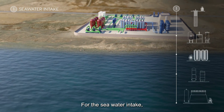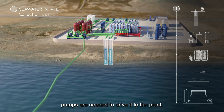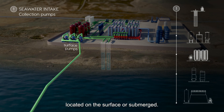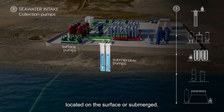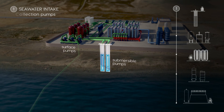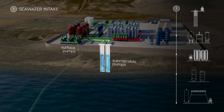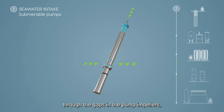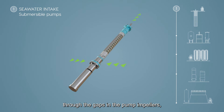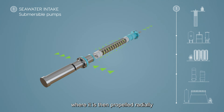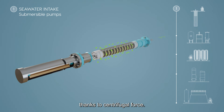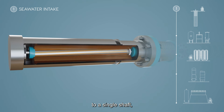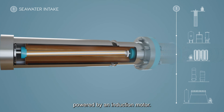For the seawater intake, pumps are needed to drive it to the plant. These can be negative suction pumps located on the surface or submerged. With a submersible pump, seawater flows into it through the gaps in the pump impellers, where it is then propelled radially thanks to the centrifugal force. These impellers are connected to a single shaft, powered by an induction motor.